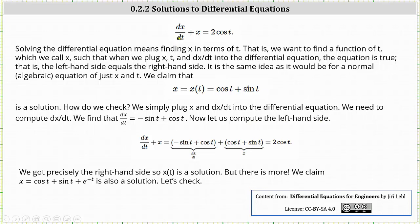Now let us compute the left side. The left side of the equation is dx/dt plus x. We need to show this is equal to two cosine t if x of t equals cosine t plus sine t is a solution. Well, dx/dt equals negative sine t plus cosine t, and then plus x gives us plus cosine t plus sine t, which must equal two cosine t. Notice how the sine terms simplify out and we are left with cosine t plus cosine t, which is two cosine t. We got precisely the right side, so x of t is a solution.